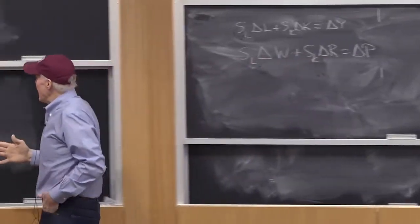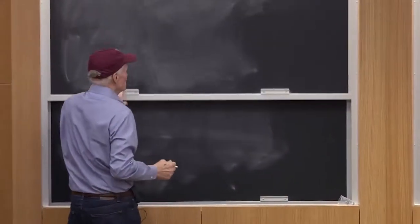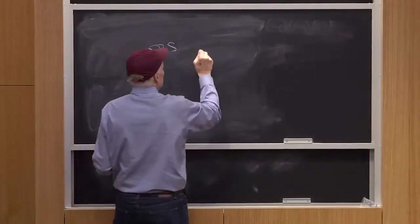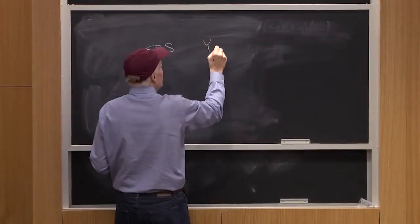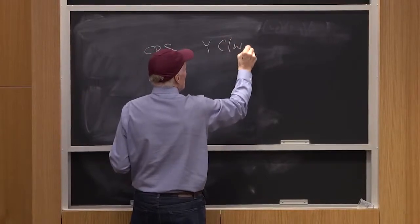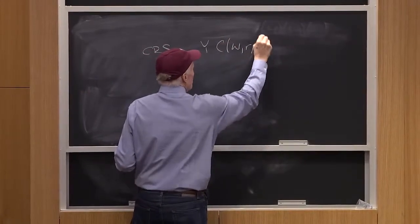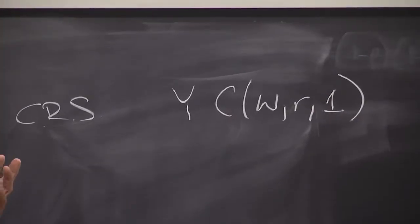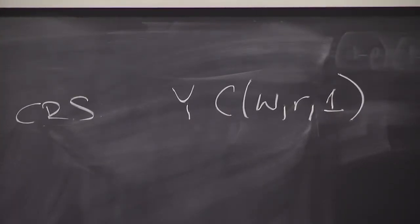And you can see that in the cost function. We said CRS, I'm going to get a cost function that looks like Y times C of WR and 1. That is, that's going to be my CRS cost function, which is right off the bat.